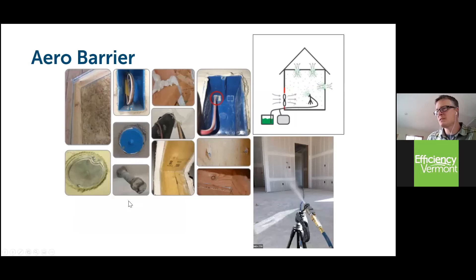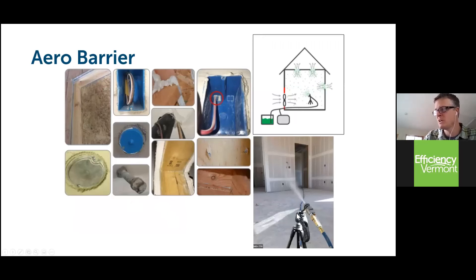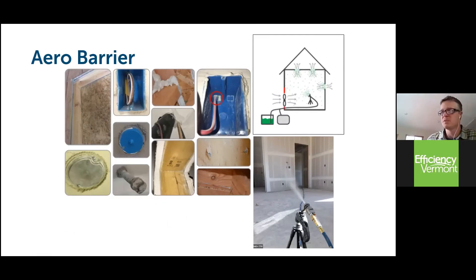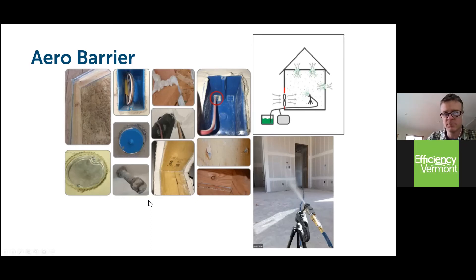Aero Barrier is another product that's come to market here in Vermont over the past few years. This is a vaporized aerosol material applied to a building under pressure — they use fans like blower door fans to pressurize the building and then aerosolize the material into it. As the building is under pressure, it pushes that material into any little hole or crack in the building envelope and seals it up. It can be done during new construction and in existing buildings, and we've been seeing some pretty interesting results from it.